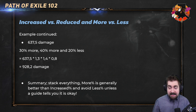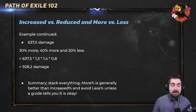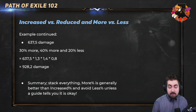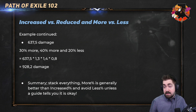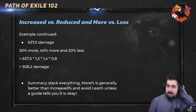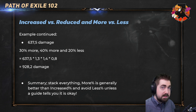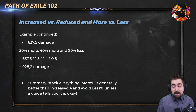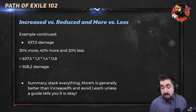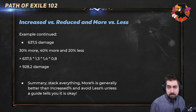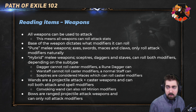To sum up: stack as many more multipliers as you can — more multiplier is generally always better than increased. There is no case where 100% increased is the same as 10% more unless you have nothing else. It's generally always good to get as much more as you can — more is a win. Always avoid less, as it will hurt you quite a lot. Obviously it depends on what else you have, but in general always prioritize more multipliers.